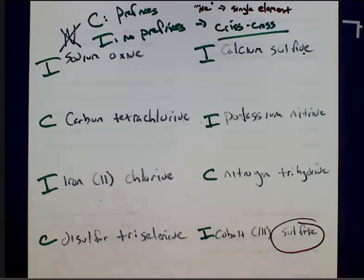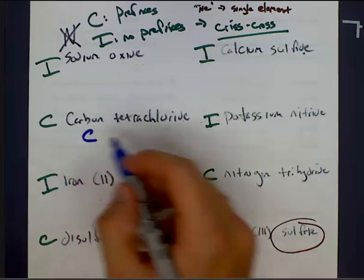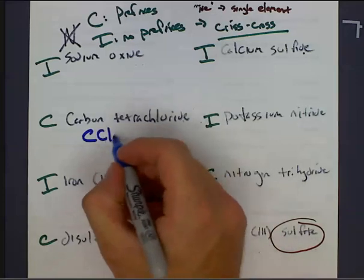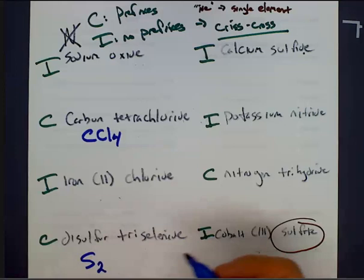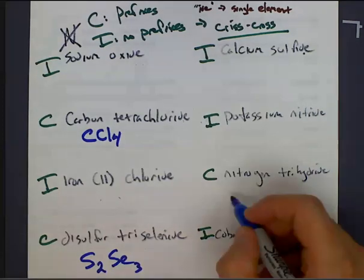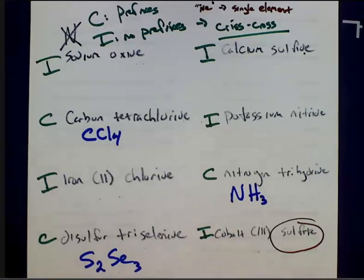So since it's easiest to name these covalent compounds, let's just go ahead and do those. Carbon tetrachloride means four chlorines. Disulfur means two sulfurs. Triselenide means three seleniums. Nitrogen trihydride means three hydrogens. And that's it.